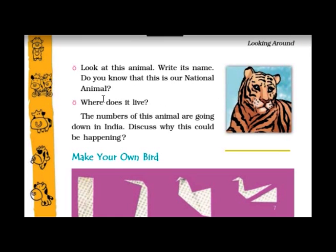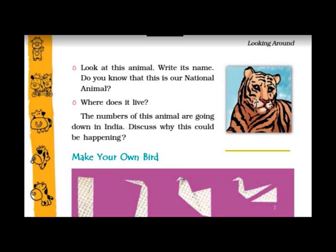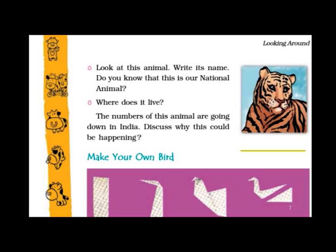Write this animal's name. Do you know that this is our national animal? This is tiger, and it is our national animal. Where does it live? The numbers of these animals are going down in India. This could be happening due to animal poaching — people kill animals for their skin. Another reason is deforestation, meaning cutting down of trees, so their habitat is lost. That is the reason these animals are becoming extinct.